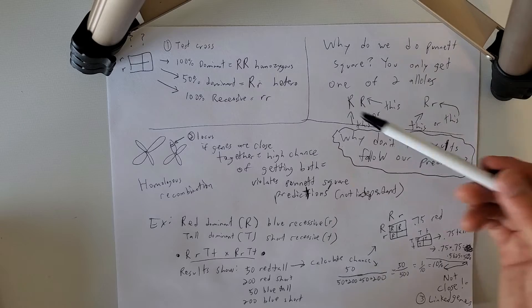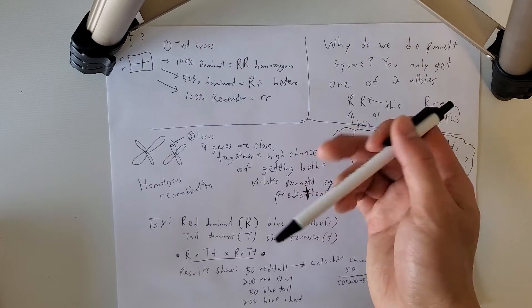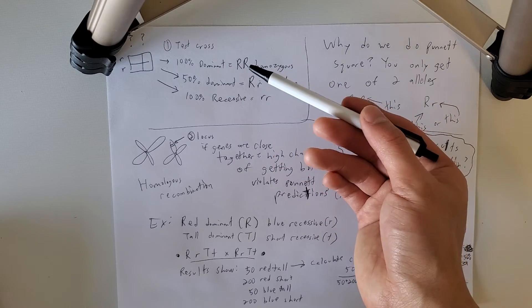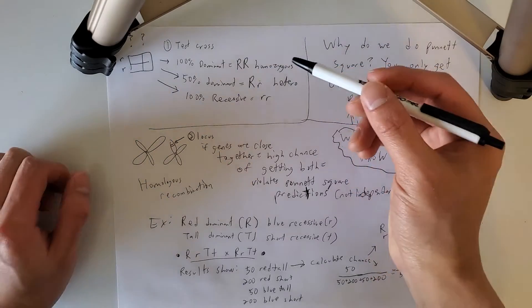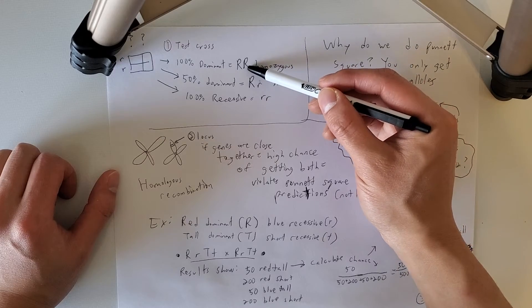First, we're going to talk about what a test cross is, because sometimes when you look at a species, you don't know whether they are homozygous or heterozygous. Homozygous and heterozygous are going to look the same. As long as you have one dominant allele, you're going to show that dominant trait.